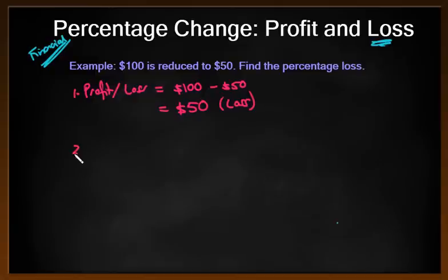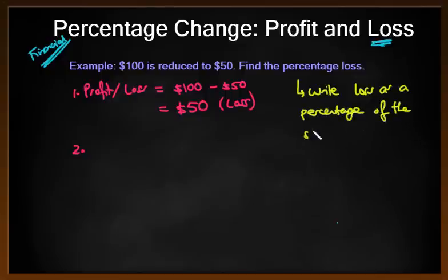The question now for the second part asks me to find the percentage loss. In reality, what this is asking me to do is asking me to write the loss as a percentage, make sure you write this down too, as a percentage of the start price. And it's always the start price for profit and loss. Unless I tell you otherwise, they might say write the loss as a percentage of the selling price, but that wouldn't be percentage loss. Anytime they ask you for percentage loss, it's always a loss as a percentage of the start price.